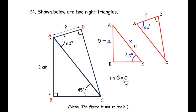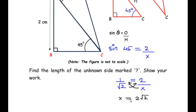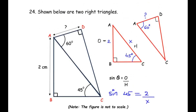sin 45° = 2/x. Since sin 45° = 1/√2, we have 1/√2 = 2/x. Cross multiplying: x = 2√2. So AC = 2√2 centimeters. This value also applies to AC in triangle ACD.